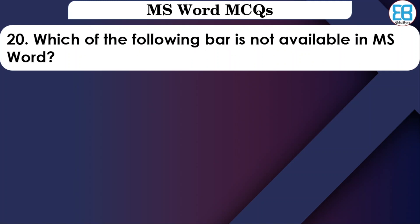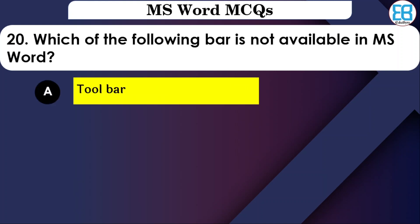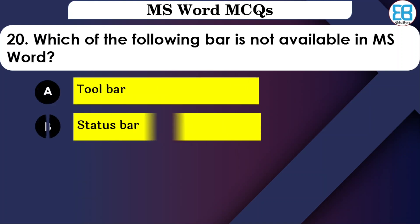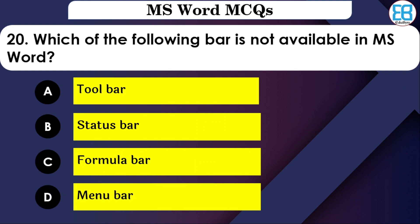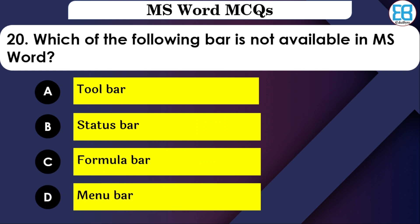Which of the following bars is not available in MS Word? The options are: Option Toolbar, Standard, Status Bar, or Formula Bar. The correct option is Formula Bar — Formula Bar is not available in MS Word; it is available in MS Excel.